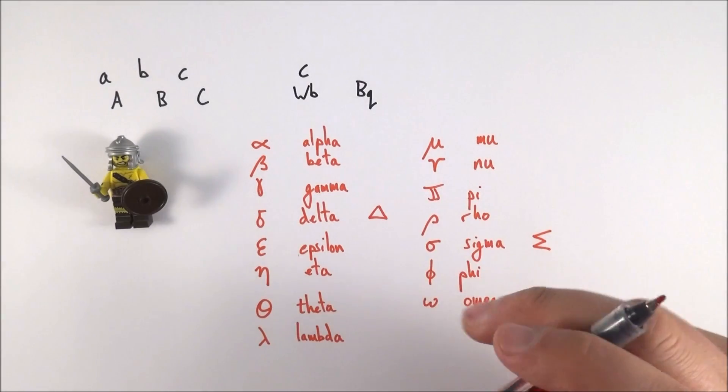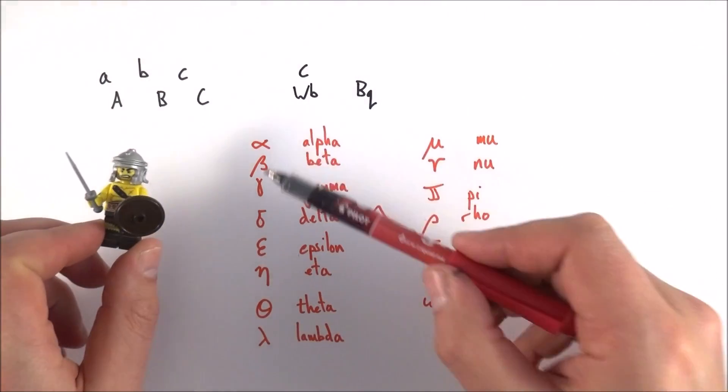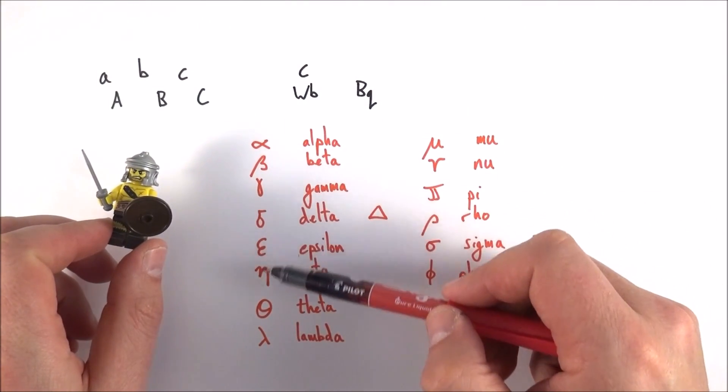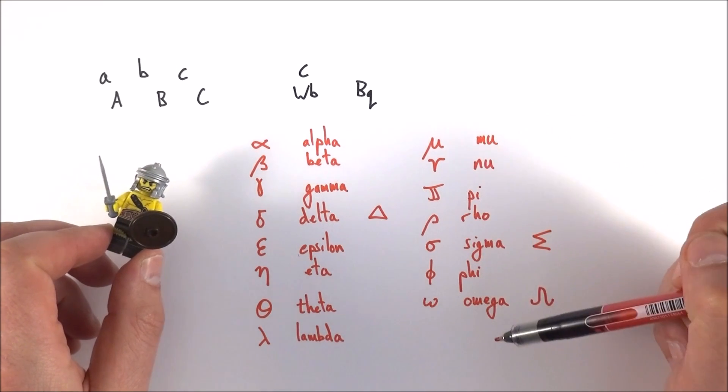Now there are more Greek letters in the alphabet, but these are very much the kind of letters that we need for A-level physics: alpha, beta, gamma, delta, epsilon, eta, theta, lambda, mu, nu, pi, rho, sigma, phi, and omega.